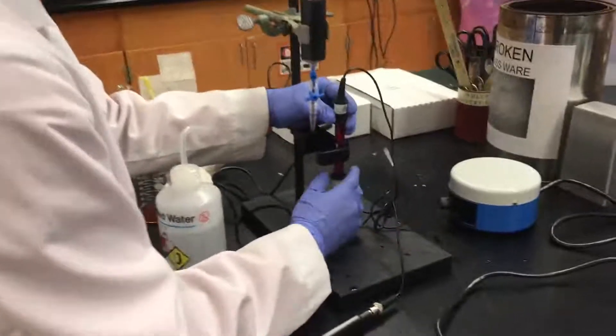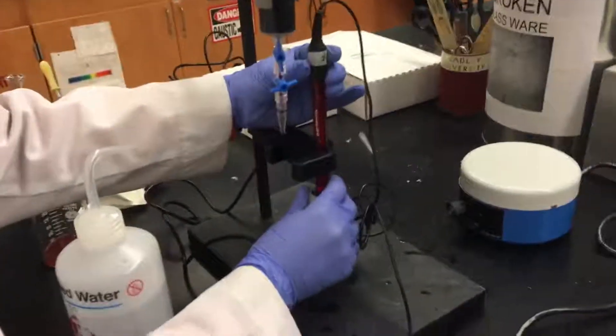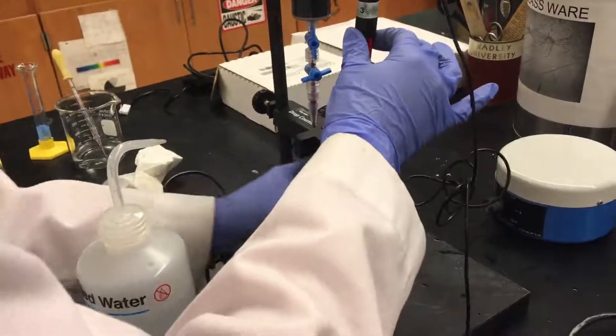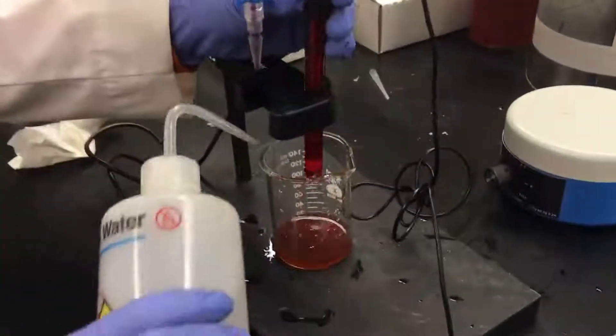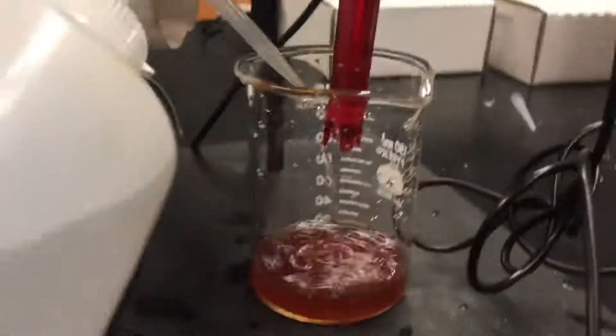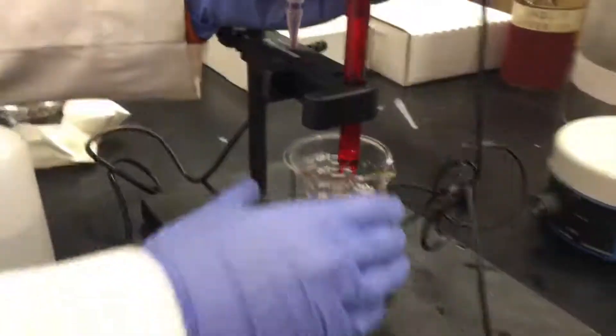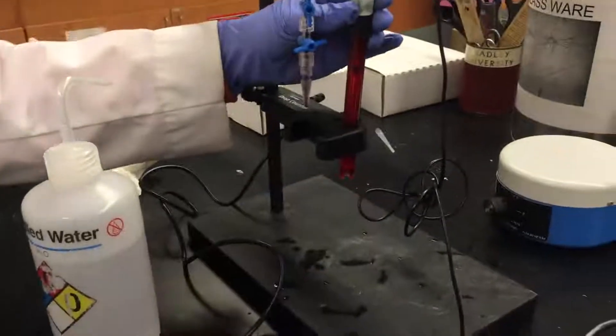So Eilish is now going to take the redox probe out of its buffer solution and place the waste beaker underneath it and clean it off by using DI water. So we want to clean that glass bulb on there just to make sure that the buffer solution doesn't interfere with our titration.